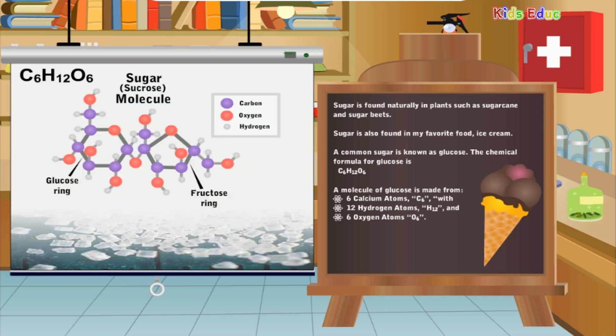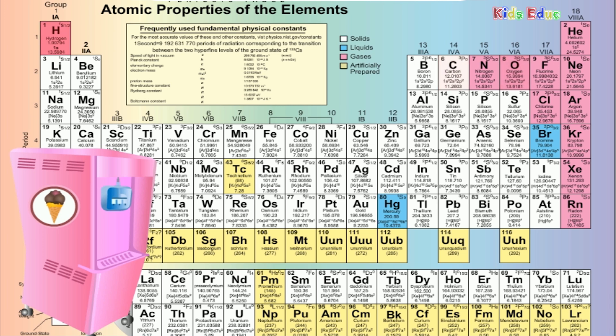What is sugar? Sugar is found naturally in plants such as sugarcane and sugar beets. Sugar is also found in my favorite food: ice cream. A common sugar is also known as glucose — a molecule composed of six carbon atoms (C6), twelve hydrogen atoms (H12), and six oxygen atoms (O6). The chemical formula for glucose is C6H12O6. If you look at sugar under a microscope, you would see small cube shapes — these cubes are sugar crystals.